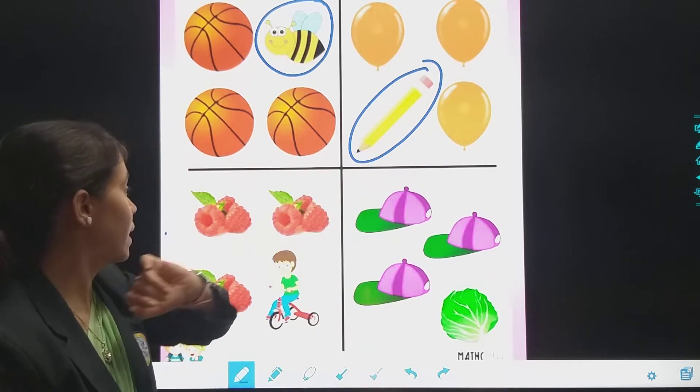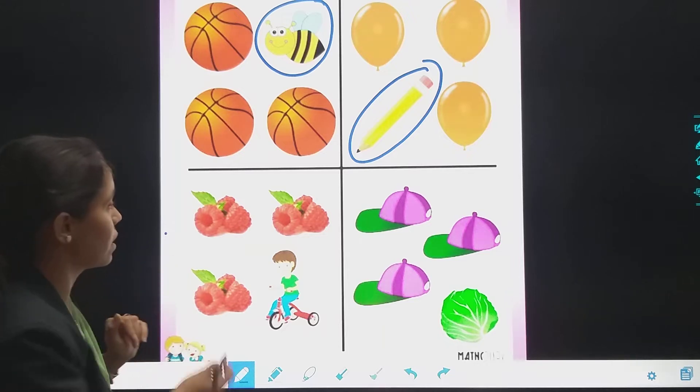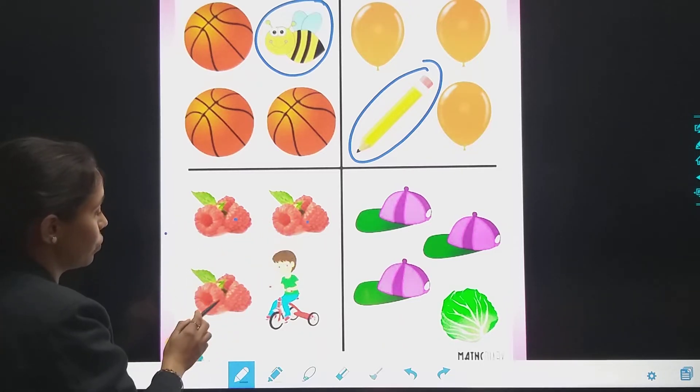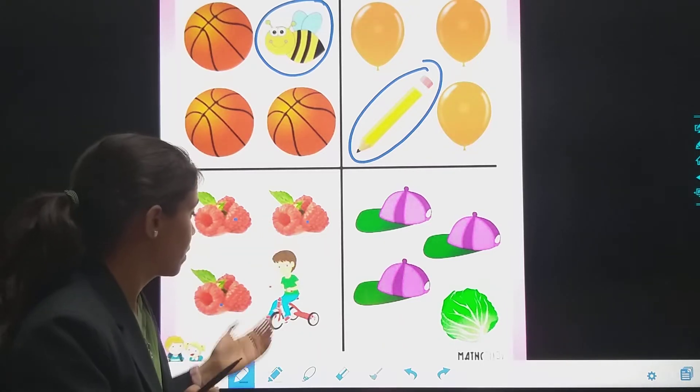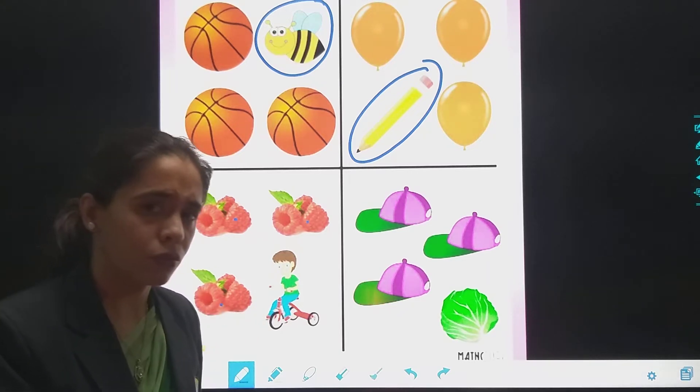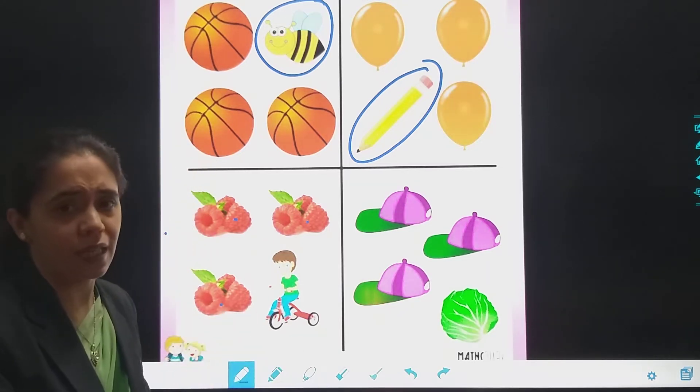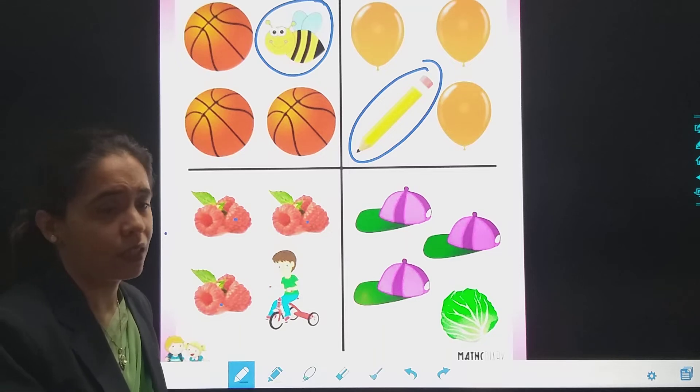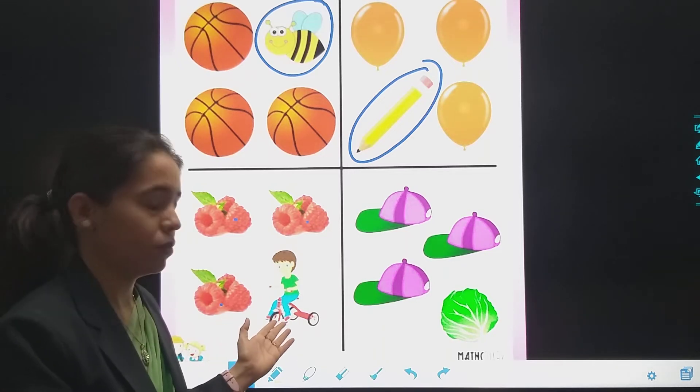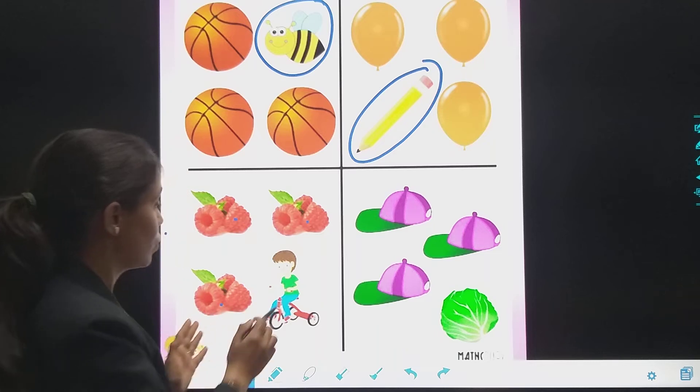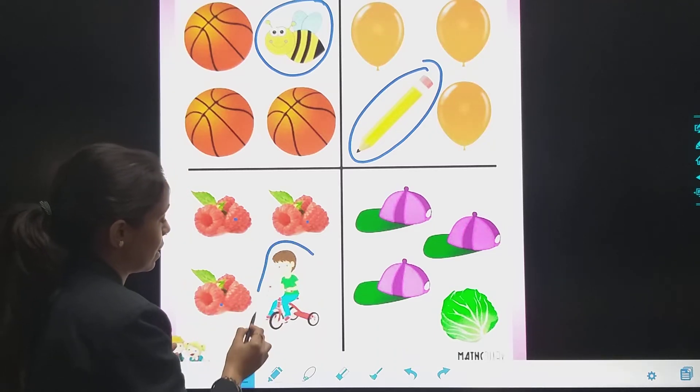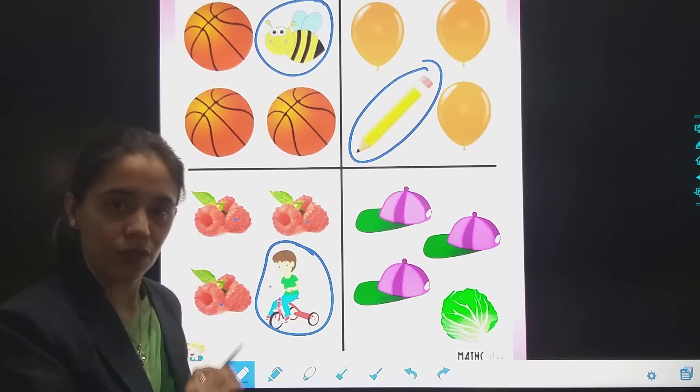Then here are some strawberries. See. One, two, three. Three strawberries. Ab yeh strawberry hai? No. This is a boy. Yes? Who is cycle chala raha hai. So this is strawberry? No. That is something different. So I will circle. Okay?